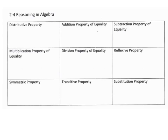This is when we're really starting to look at proofs. So the distributive property — you need to know your properties and theorems, so we're going to go over some properties here. The distributive property looks like this: 2 times the quantity x plus 4 equals 2x plus 8.